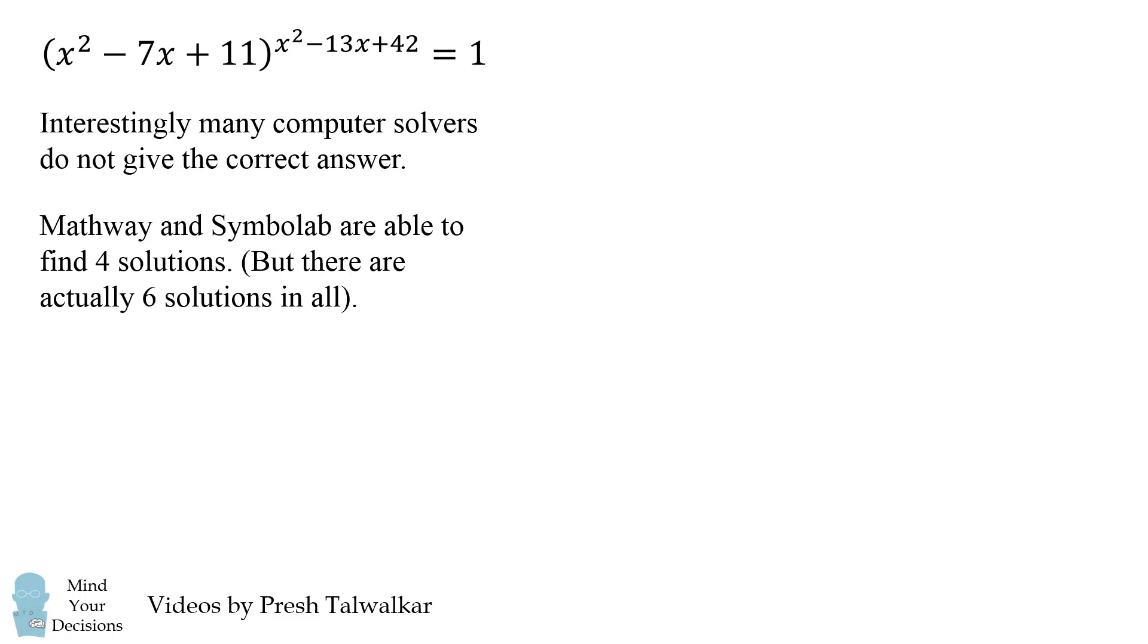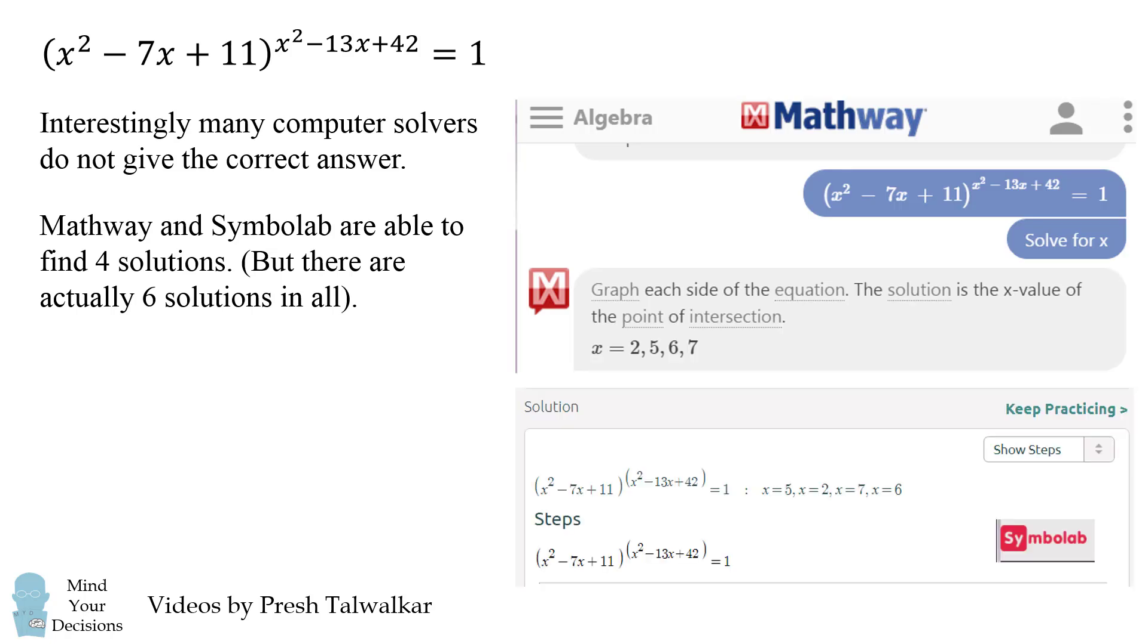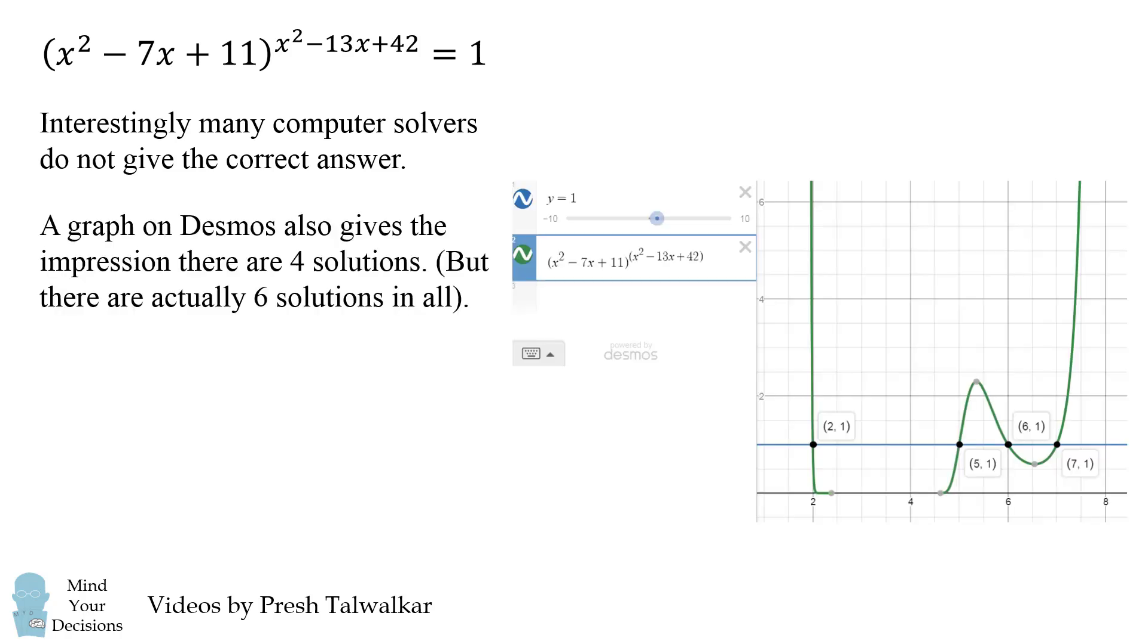Similarly, Mathway and Symbolab are able to find four of the solutions, but they miss two of the solutions. A graph on Desmos would suggest that there are four solutions, but as I'll demonstrate in a minute, there are actually six solutions.